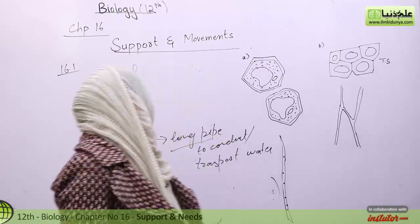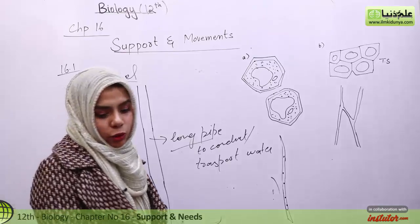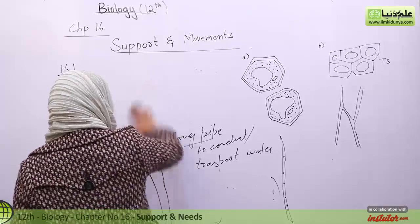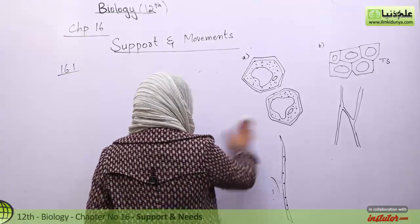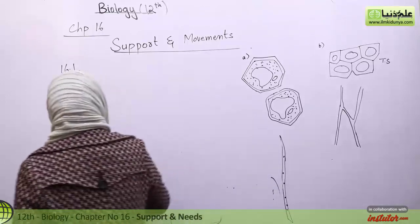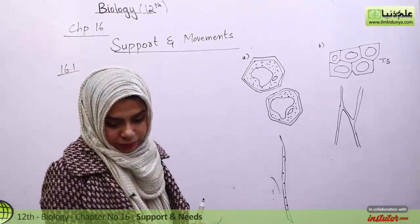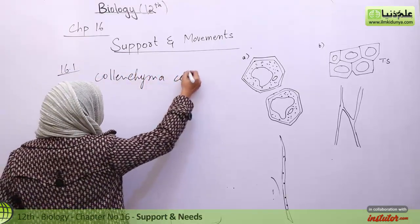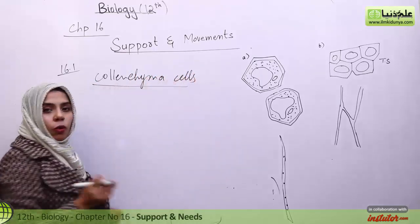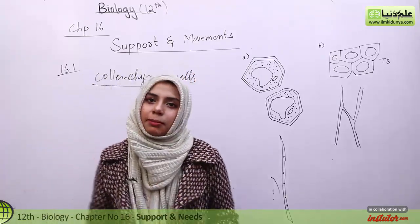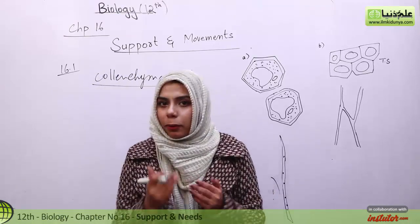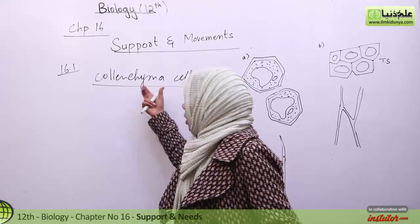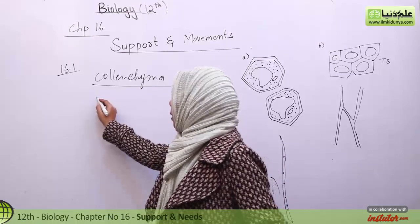Now if we look at collenchyma cells, these cells usually do not have lignin — there is no deposition of lignin inside them. These are living cells — they have protoplast. Collenchyma cells are living cells, and because they have protoplast they have the ability to divide.